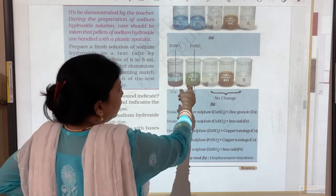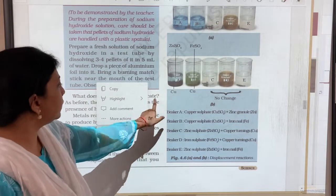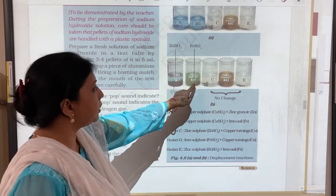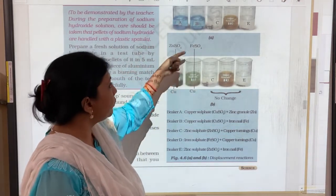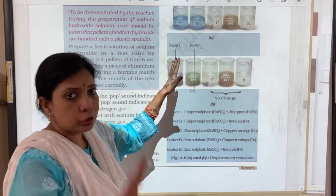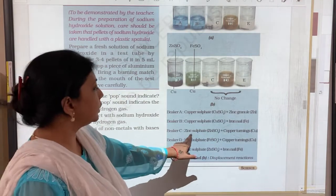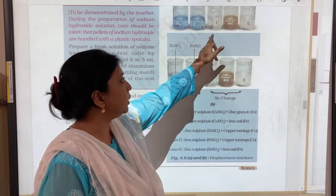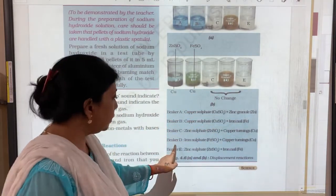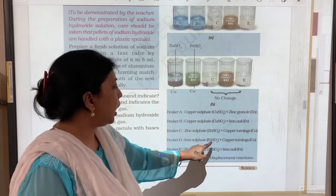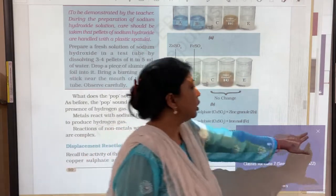Now in the second one, again we had copper sulphate solution and we had added iron into it, iron nail. Instead of blue we have a greener solution of iron sulphate. We saw the two changes. Then third one was zinc sulphate and we added copper turnings into it. Is there a change? No change. In beaker D we had iron sulphate and we added copper into it. Is there a change? There is no change.